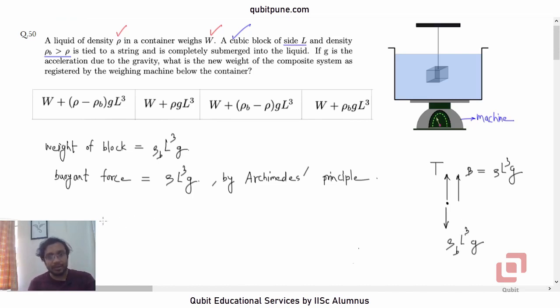Yes. Tension will be given by the difference between the total downward force minus the total upward force. So it will be ρ_B minus ρ, and it is given that ρ_B is greater than ρ, so this will be positive. ρ_B minus ρ into L³g. Which means tension is (ρ_B - ρ)L³g. So tension is taking care of only a part of it.